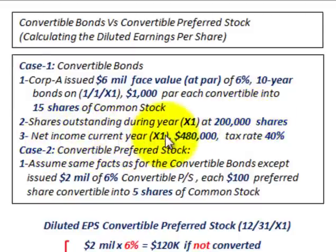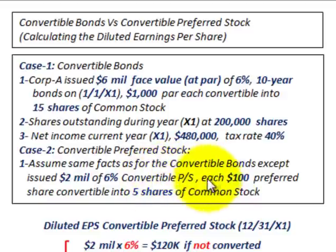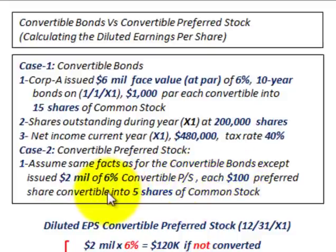The net income for year X1 is $480,000, and we have a tax rate of 40%. For case two, convertible preferred stock, we assume the same facts as the convertible bonds except they issued $2 million worth of preferred stock with a 6% dividend rate. Each preferred share has a $100 par value, and each $100 par value preferred share is convertible into 5 shares of common stock.